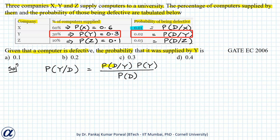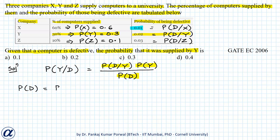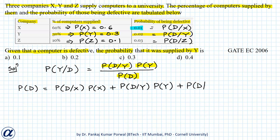Here P(D | Y) and P(Y) are known, but P(D) is not known. So first I will find P(D) using the total probability theorem. P(D) can be written as P(D | X)·P(X) + P(D | Y)·P(Y) + P(D | Z)·P(Z).